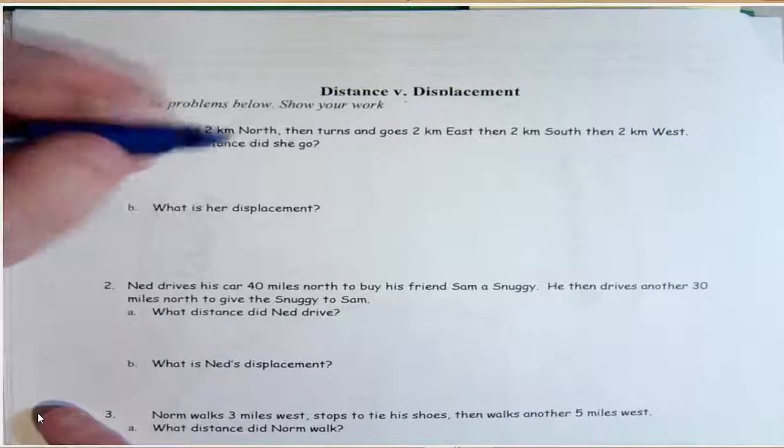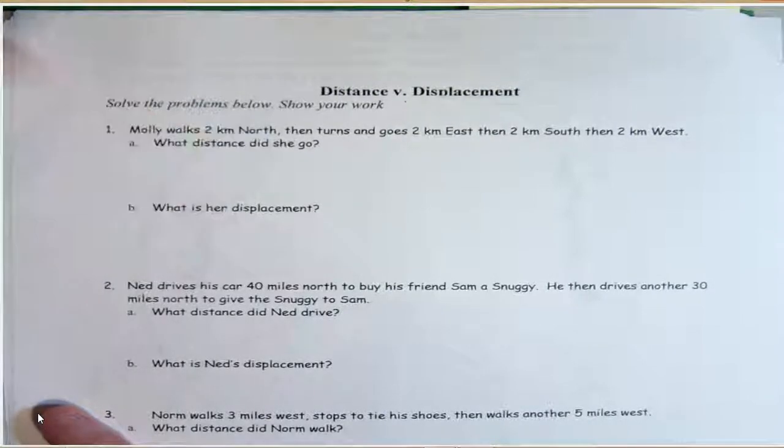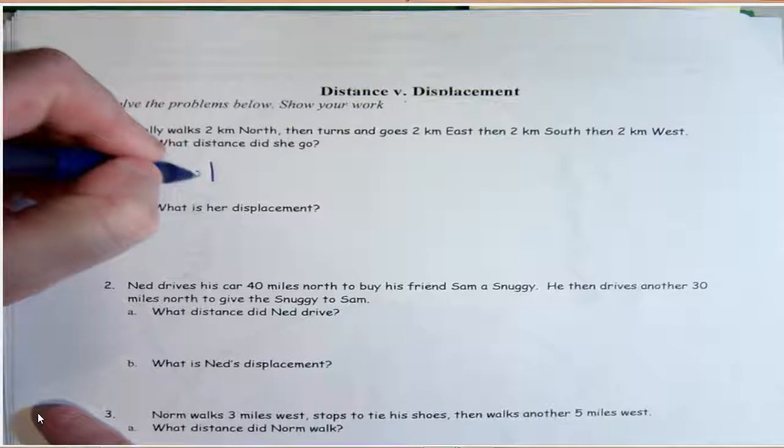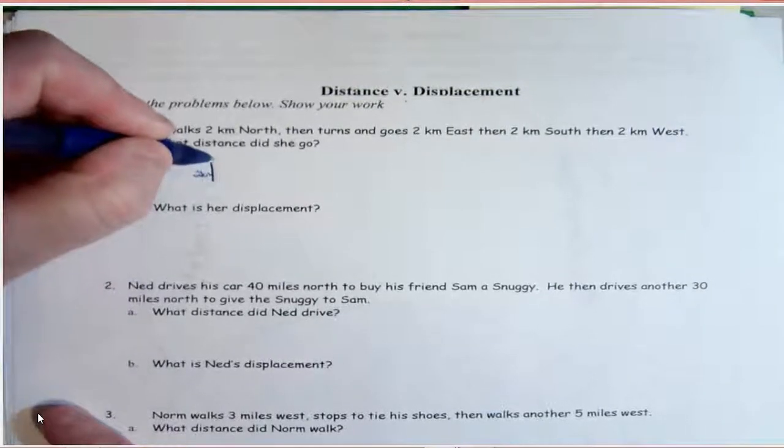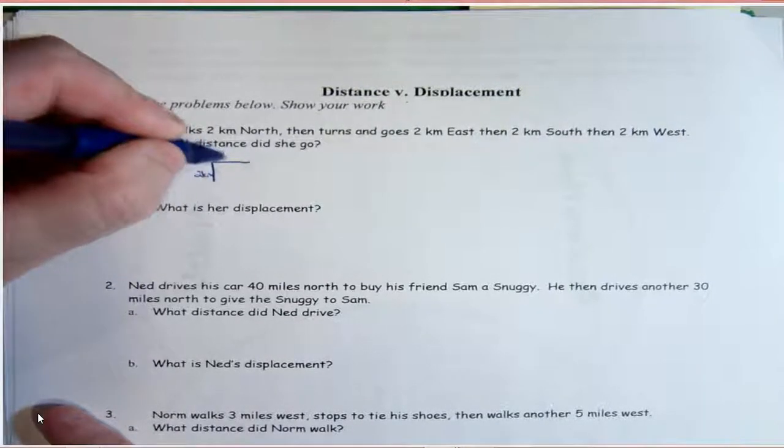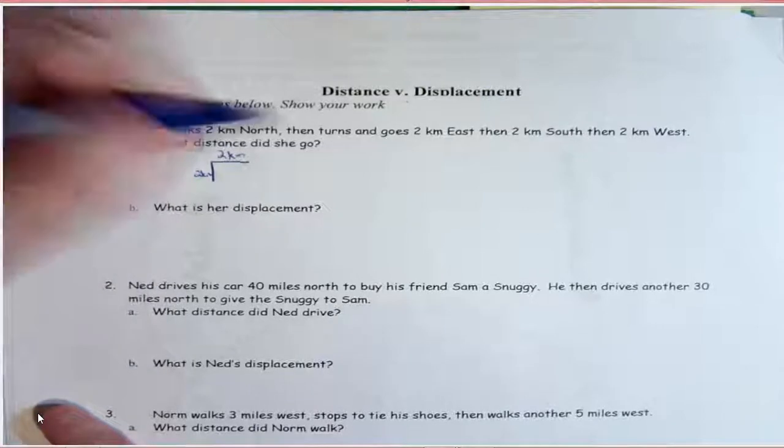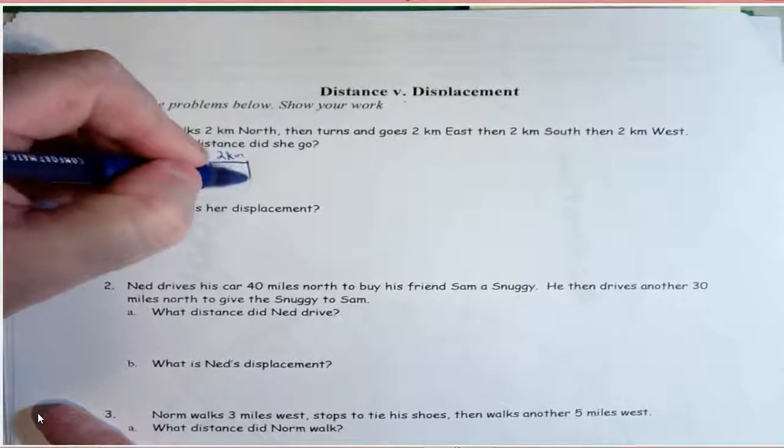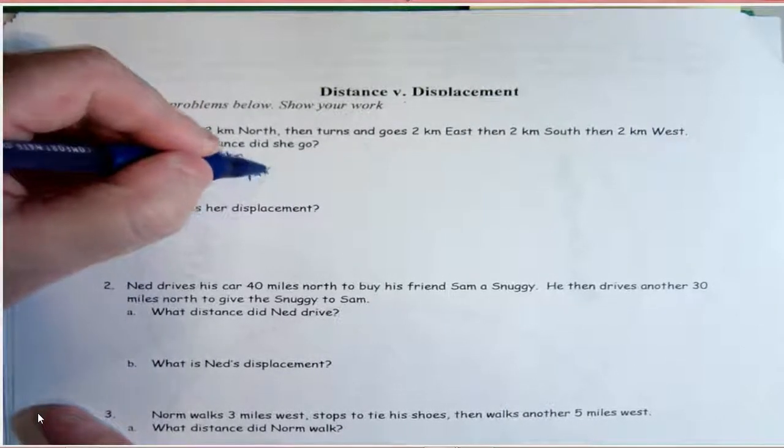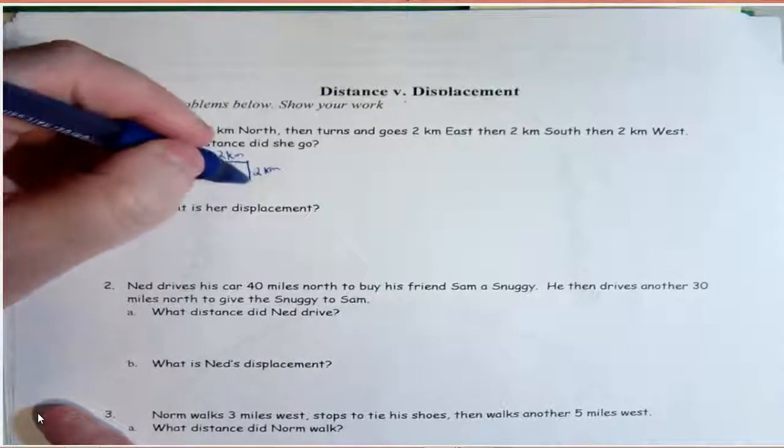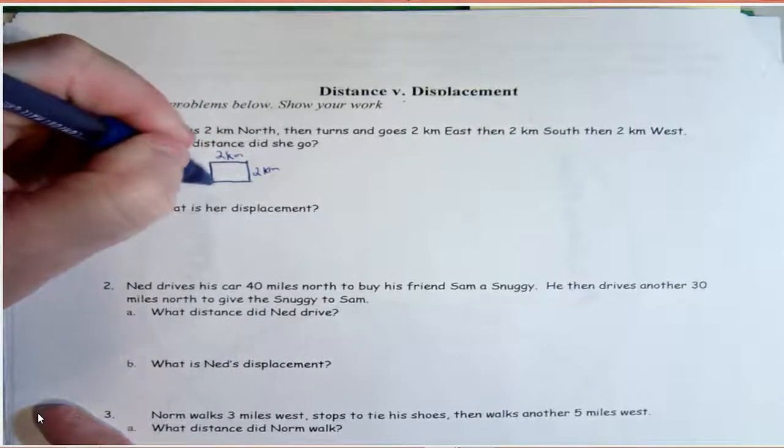So let's draw the picture first. Each one of my lines looks like it's going to be 2 kilometers. She went 2 kilometers north, then she went 2 kilometers east, then she went 2 kilometers south, and then she went 2 kilometers west. So this is her starting point.